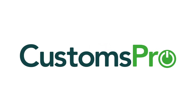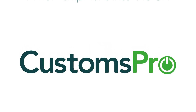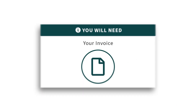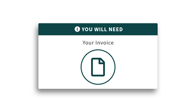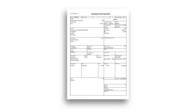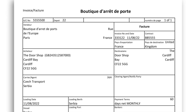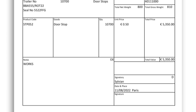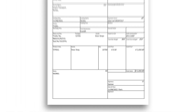Hello and welcome to Customs Pro. In this video we will show you how to create a new shipment into the UK. Before we start, please ensure you have a copy of your invoice to hand, as this should contain all of the details required to complete this process. For this video we will be using an example invoice. Your invoice may look different in appearance, however it should contain all of the correct information required to complete the following steps.